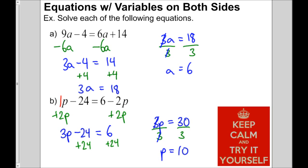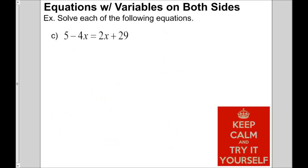When the variable is on both sides, we need to get rid of one of them, and it's easier to pick on the smaller variable term. Here's the last one — give it a go.